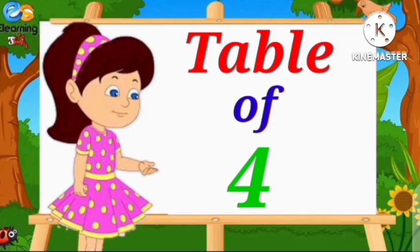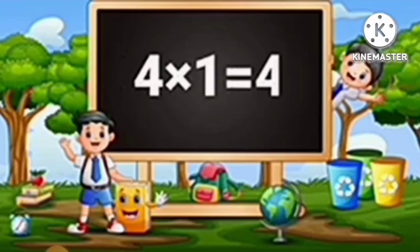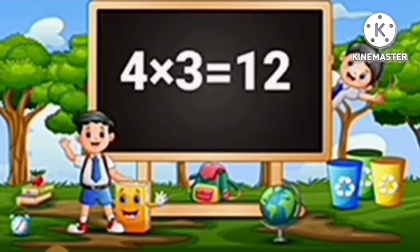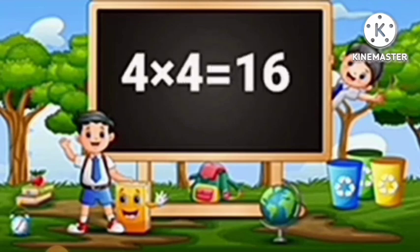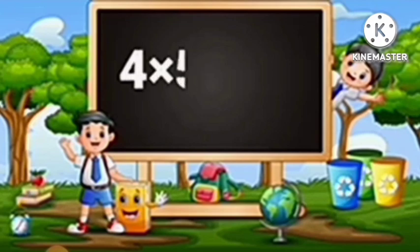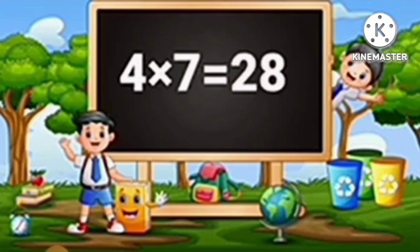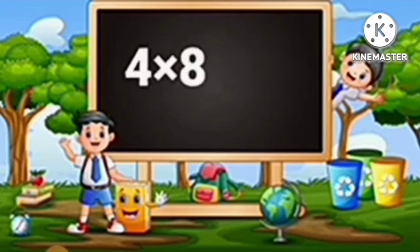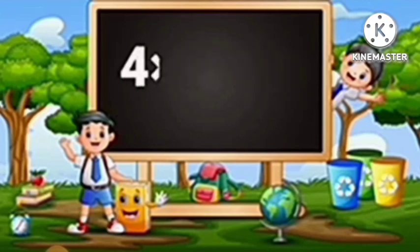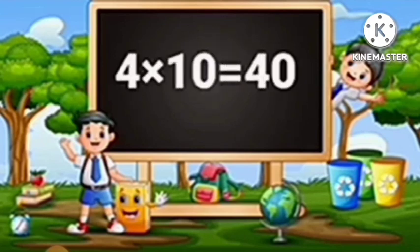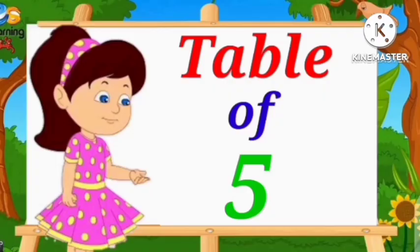Table of Four. Four ones are four. Four fours are sixteen. Four fives are twenty. Four sixes are twenty-four. Four sevens are twenty-eight. Four eights are thirty-two. Four nines are thirty-six. Four tens are forty.